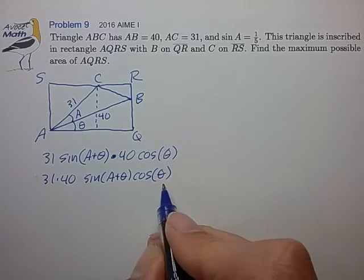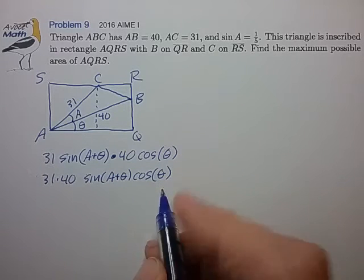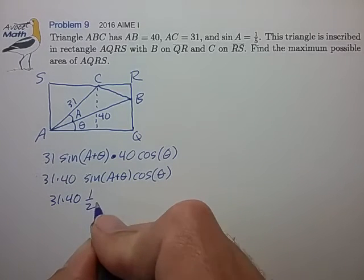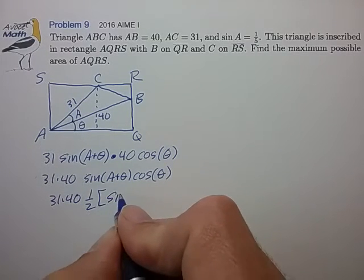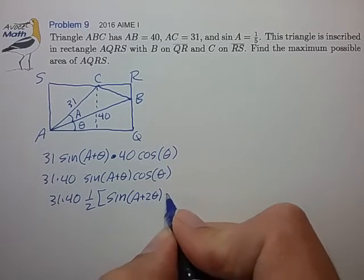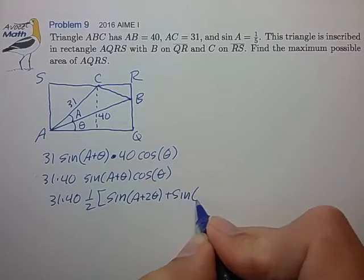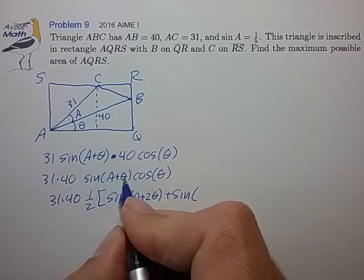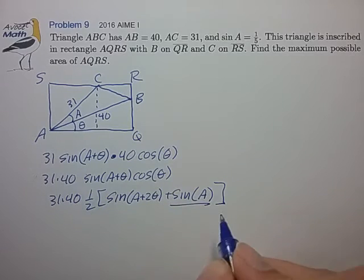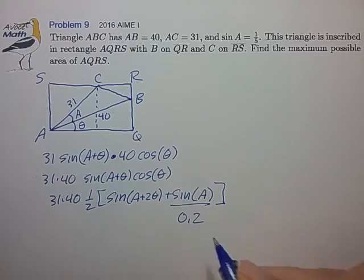And we can use our sum angle formulas to reduce this to 31 times 40 times one-half times sine of the sum plus the sine of the difference. And that's convenient because we know the sine of angle A - that's 0.2 from the given.